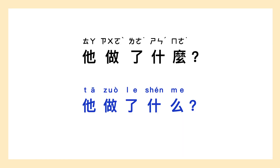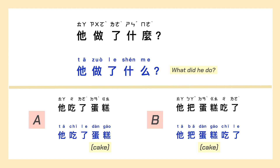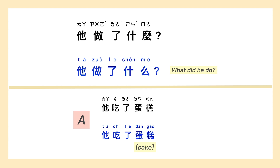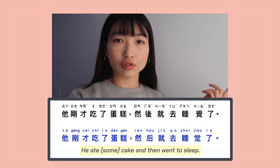Now let's have a small test. If I ask you 她做了什么, how would you respond? A. 她吃了蛋糕。 B. 她把蛋糕吃了。 The answer is A, because we want to focus on what she does. So the conversation could be: 她刚才做了什么? 她刚才吃了蛋糕，然后就去睡觉了。